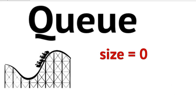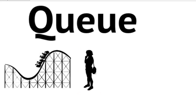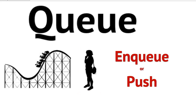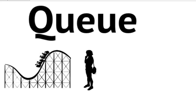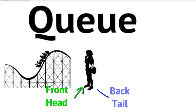All of a sudden a lady comes up and gets in line for this ride. We would say that this lady is now enqueued, or she has been pushed onto the queue. In terms of the abstract data type, we'd say the item was pushed onto the queue or enqueued — I prefer enqueue because it separates us from the stack terminology where we use push. This woman represents what we call the front or head of the queue, and since she's the only person in the queue, also the tail or back of the queue. Our queue is now of size one.